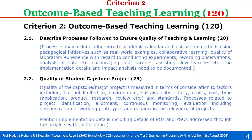Sub-criterion 2.1: Describe process followed to ensure quality of teaching and learning — weightage is 20. The process may include adherence to academic calendar and instruction methods using pedagogical initiatives such as real-world examples, collaborative learning, quality of laboratory experience with regard to conducting experiments, recording observations, analysis of data, etc. Also encouraging fast learners, assisting slow learners, etc. The implementation details and impact analysis need to be documented with respect to all these factors.